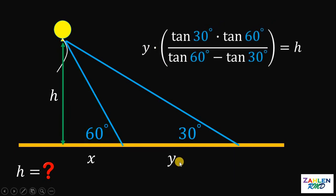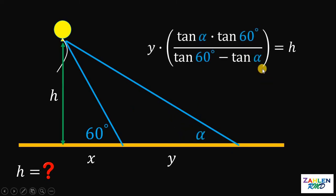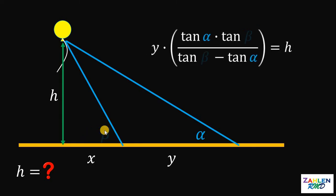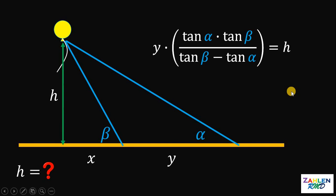So all instances of 100 become y. What if the 30 degrees is not actually 30 degrees? In some problems it might be 25 degrees, 10 degrees, and so on. In general, let's call that angle alpha, so all 30° becomes alpha. Similarly, the 60 degrees can be any given angle — let's call it beta, so all 60° becomes beta. Therefore, we now have a general formula: h = y × tan(α) × tan(β) / [tan(β) − tan(α)].